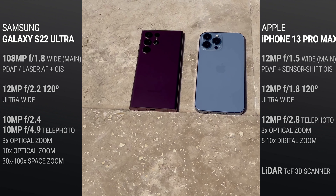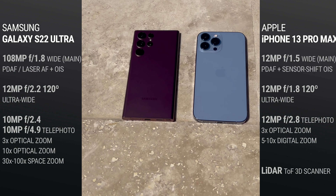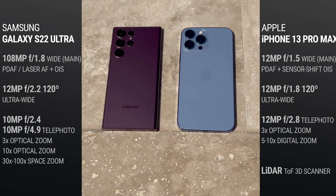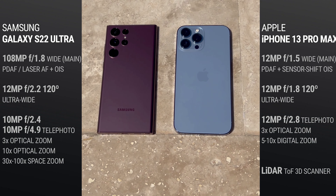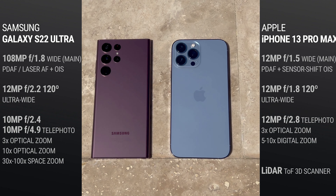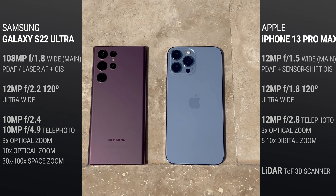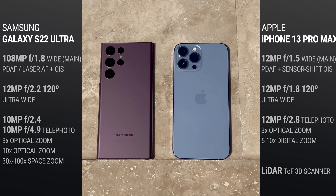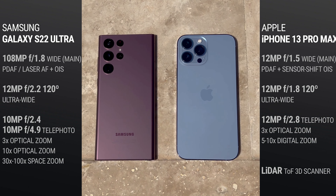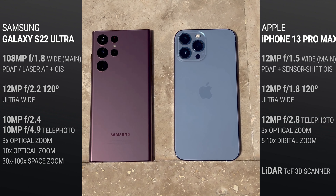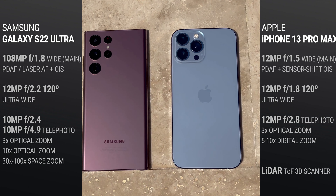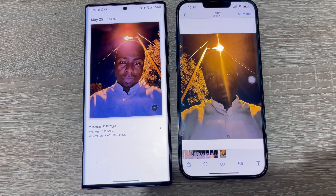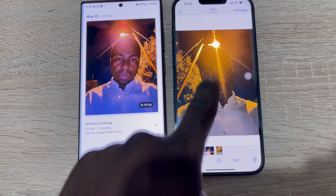To kick things off, here are the camera specifications of both phones, just to give you an idea of what you're dealing with. All pictures and videos are taken in auto mode. For clarification, all photos from the iPhone save as IMG, and all photos from Samsung save differently.